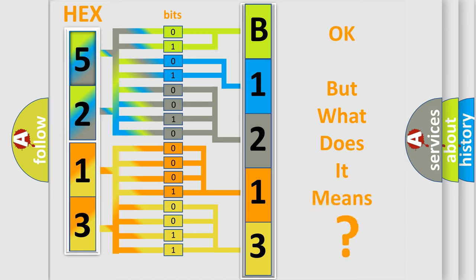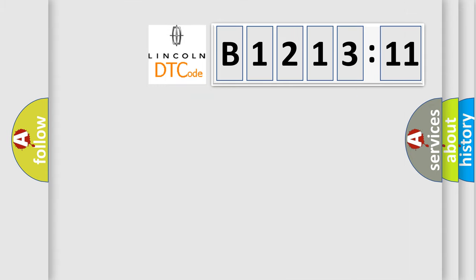We now know in what way the diagnostic tool translates the received information into a more comprehensible format. The number itself does not make sense to us if we cannot assign information about it to what it actually expresses. So, what does the diagnostic trouble code B121311 interpret specifically for Lincoln car manufacturers?